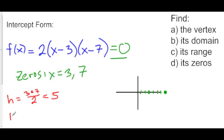we can find the y value of the vertex by plugging h back into f. So the y value of the vertex is equal to f of 5. We plug 5 into f. 5 minus 3 is 2 times 2 is 4. 5 minus 7 is negative 2. And 4 times negative 2 gives us negative 8. So our vertex is at 5 comma negative 8.